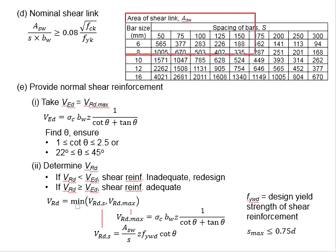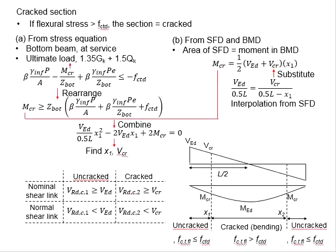This table shows the areas of the shear links as defined by its bar size and also its spacing. The area here is presented in the unit of mm squared.